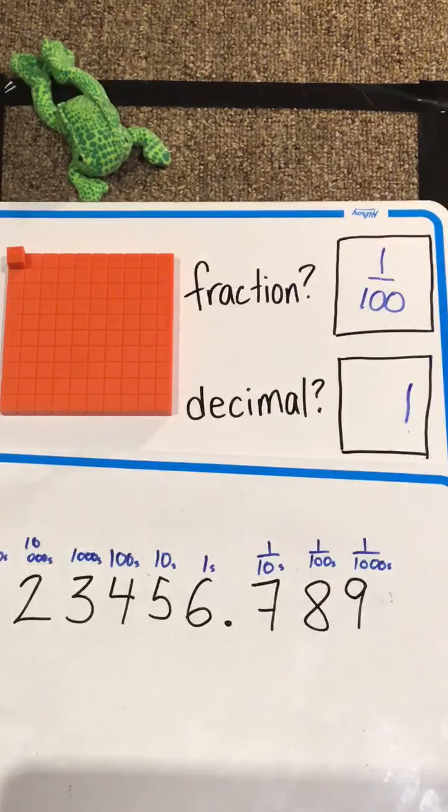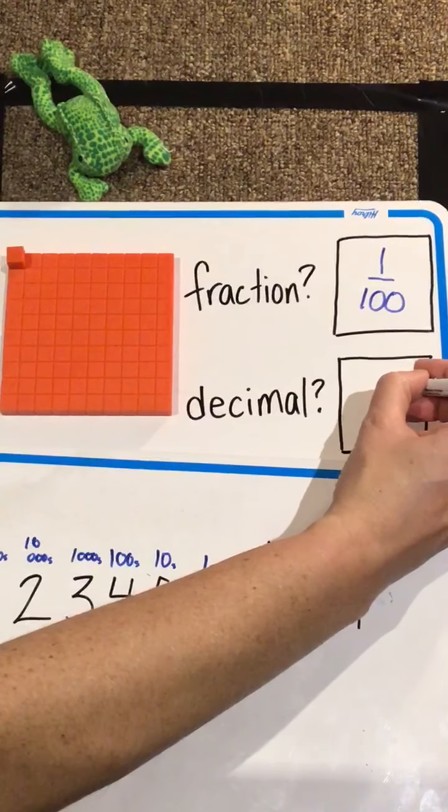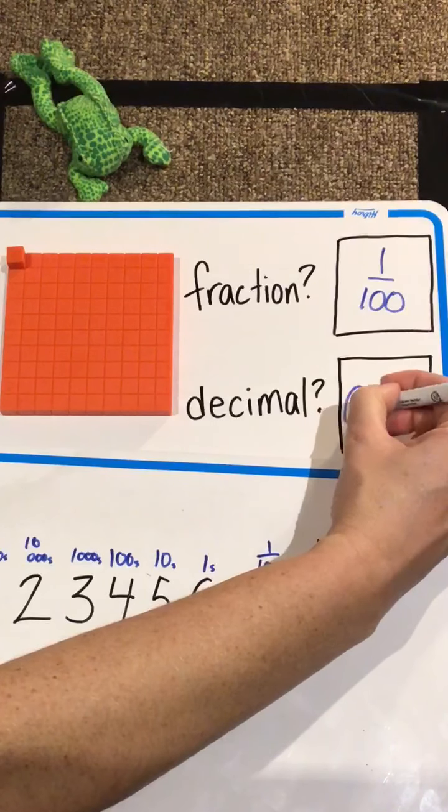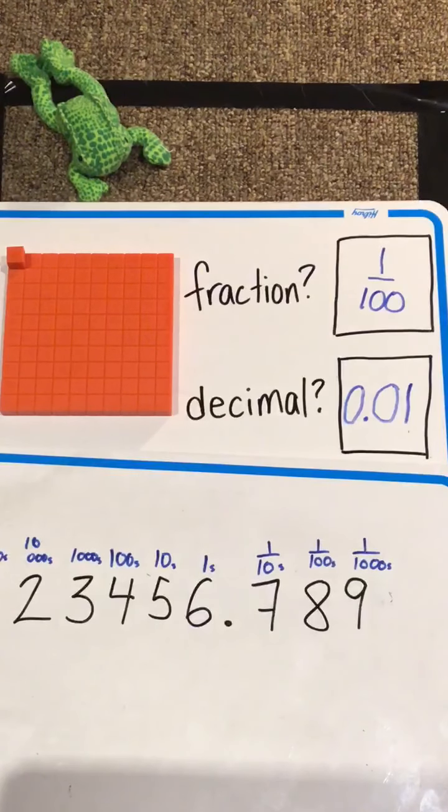So how do we know that one is two spots to the right of the decimal place? Well, we use our good friend, Zero the Hero, placeholder extraordinaire. So we have zero full cakes, zero tenths of a cake, but one one hundredth of a cake.